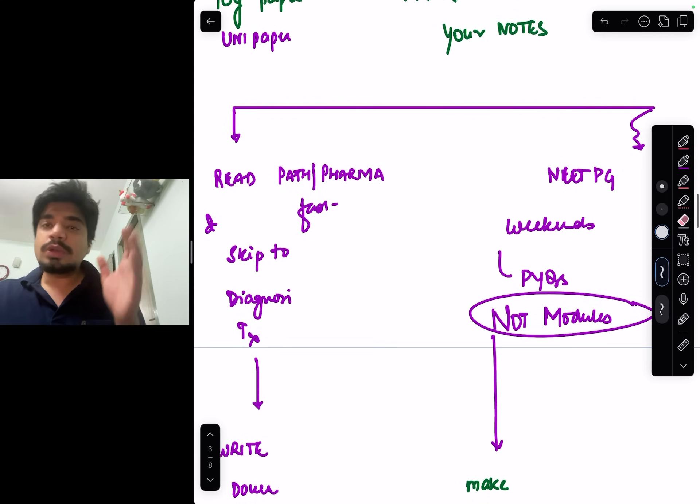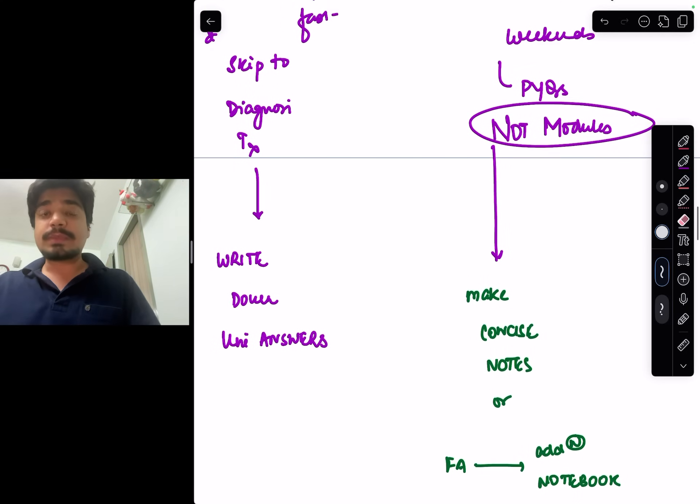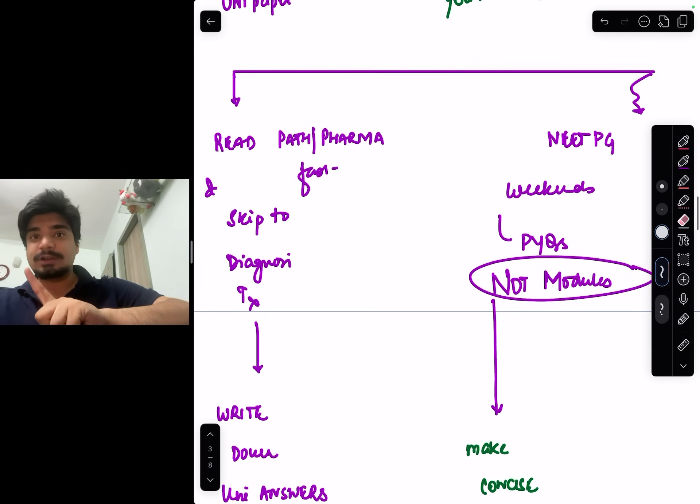So what should you do? Read path pharma first and read it very fast. You have already done it in First Aid. Directly skip to diagnosis and treatment. Write down those answers of the past five to seven years papers and you're done with your university exams.